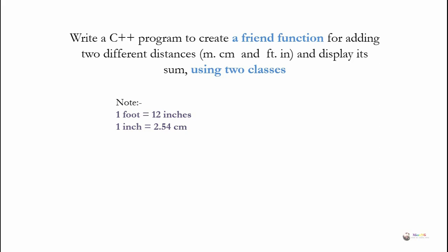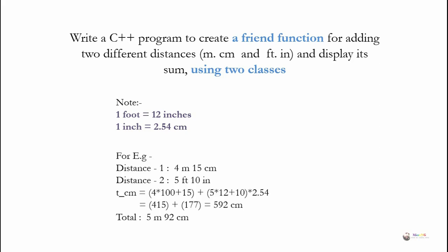One foot is equal to 12 inches and one inch is equal to 2.54 centimeters. For example, we have a distance like 4 meters and 15 centimeters; another distance is 5 feet and 10 inches. First we will calculate the total centimeters from the first distance: 4 into 100 plus 15, giving the total centimeters of the first distance.